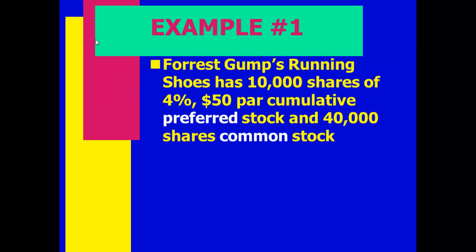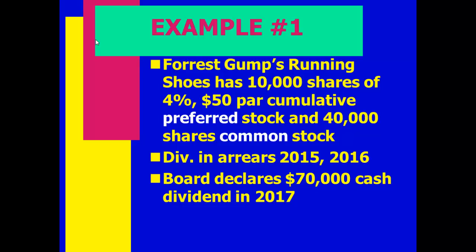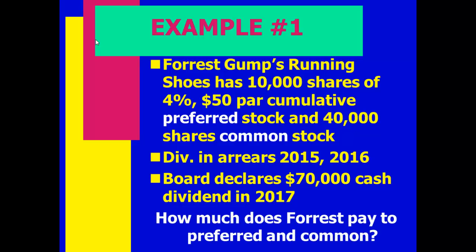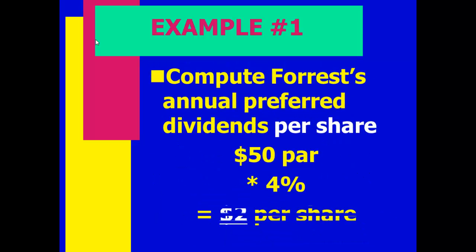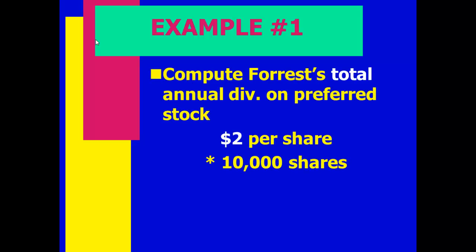Example: 10,000 shares, 4%, $50 par value, cumulative preferred stock outstanding, with 40,000 shares of common stock. Dividends are in arrears for 2015 and 2016. It's now 2017 and we have $70,000 cash. The annual dividend per share is $50 par times 4% equals $2 per share. Total annual preferred dividend is $2 times 10,000 shares equals $20,000 per year.